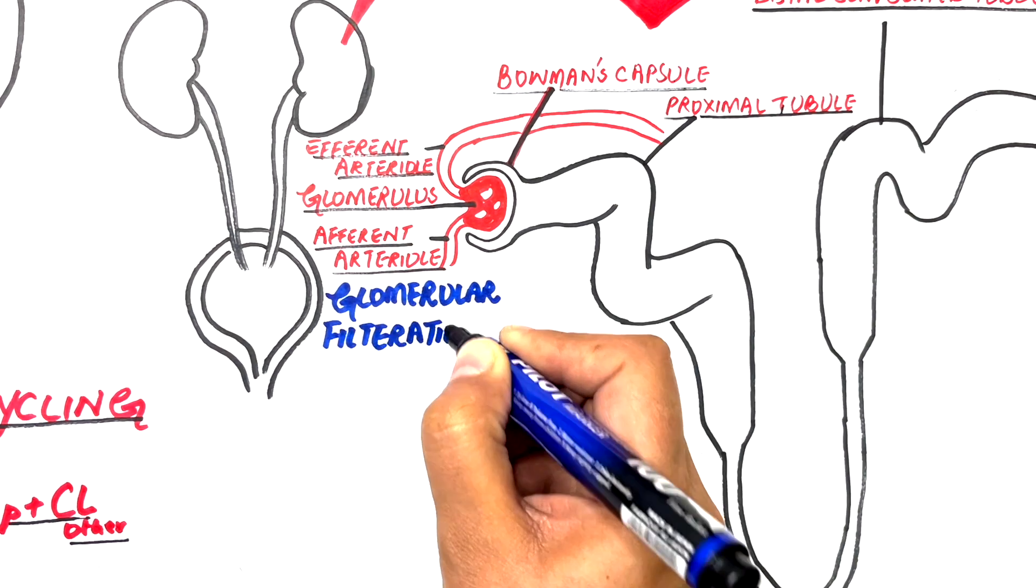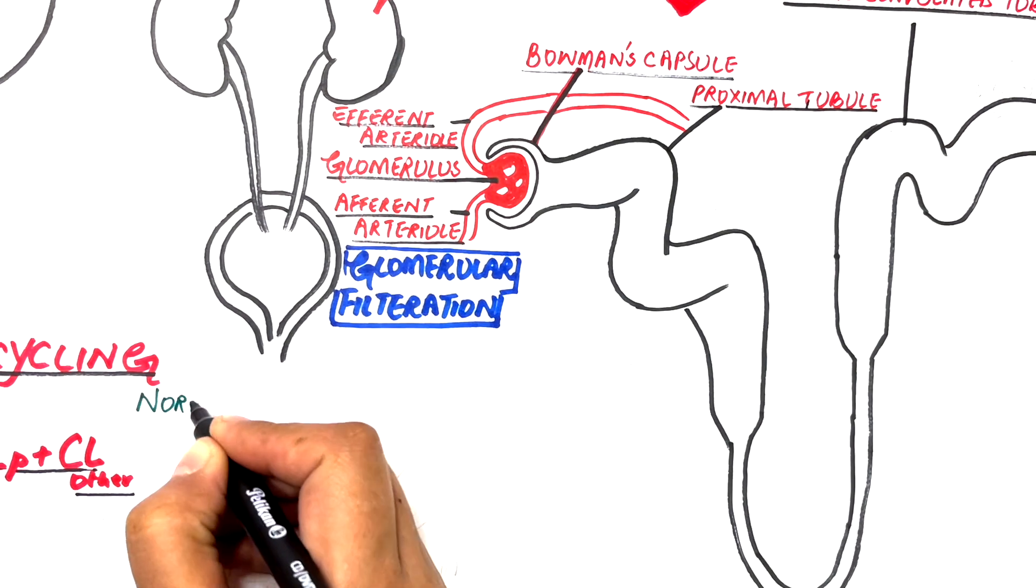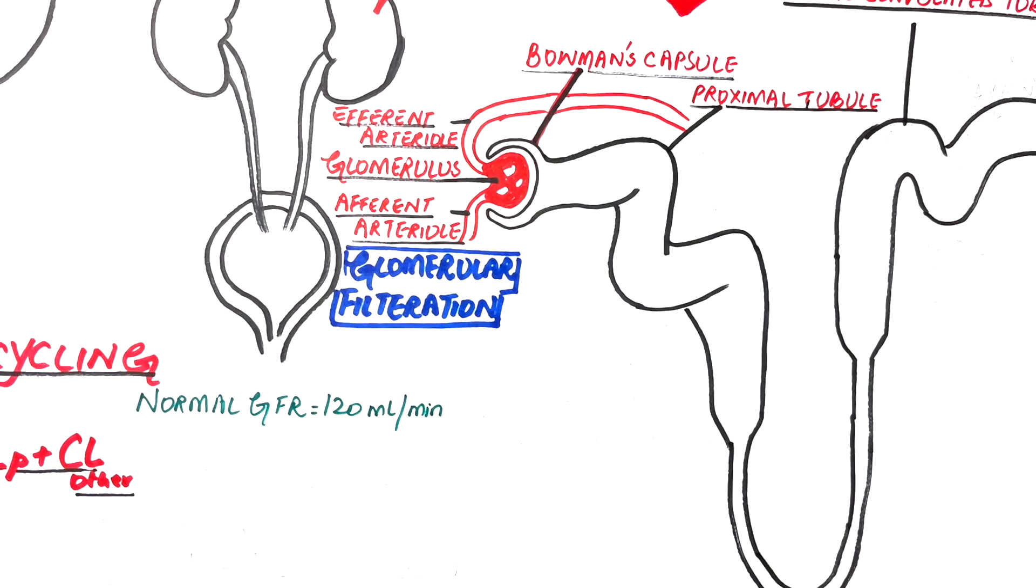Coming to the first mechanism of drug excretion, which is glomerular filtration, the normal GFR or glomerular filtration rate is 120 ml per minute. Drugs which are free or not bound to albumin protein can pass through the Bowman space as part of the glomerular filtrate. The passage of the drug through the Bowman space is not influenced by lipophilicity and pH. However, variations in GFR or protein binding of the drugs do affect this process.